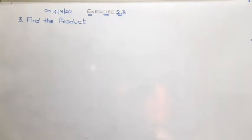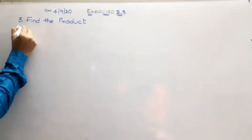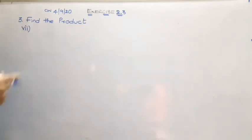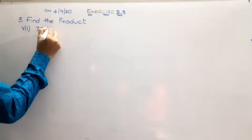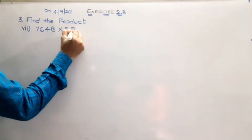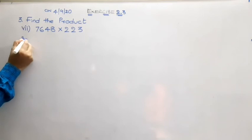A very pleasant morning children. Let us continue our classwork as we are done up to the sixth problem of this row. We are going to start with the 7th one, that is 7648 multiplied by 223. Let us start the solution for this.